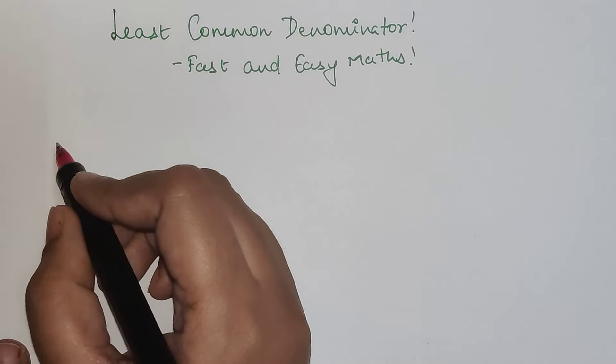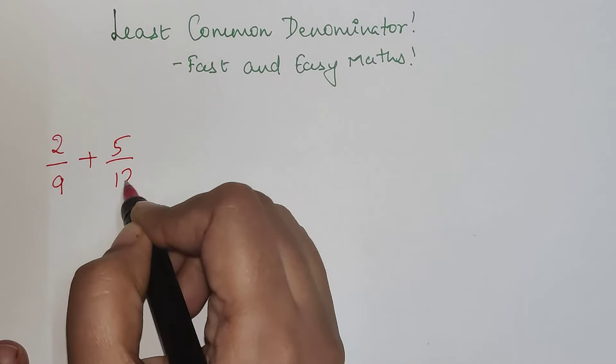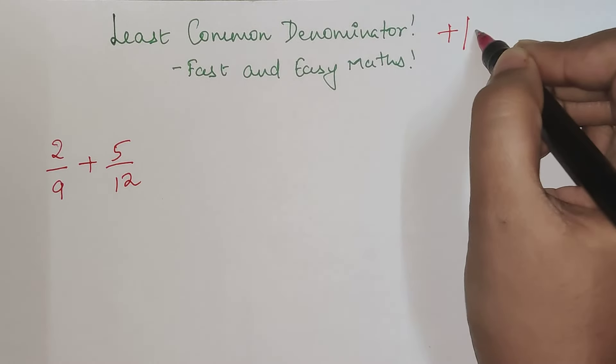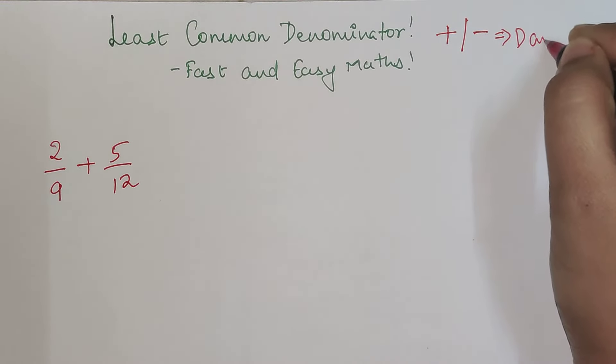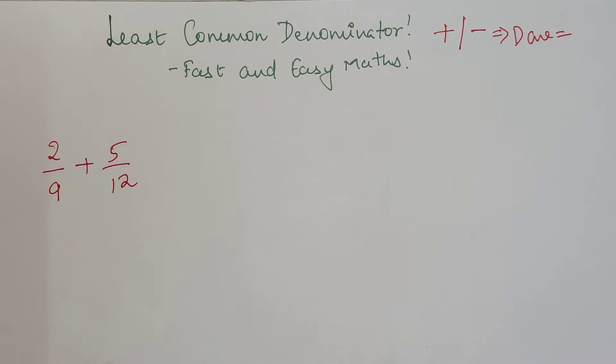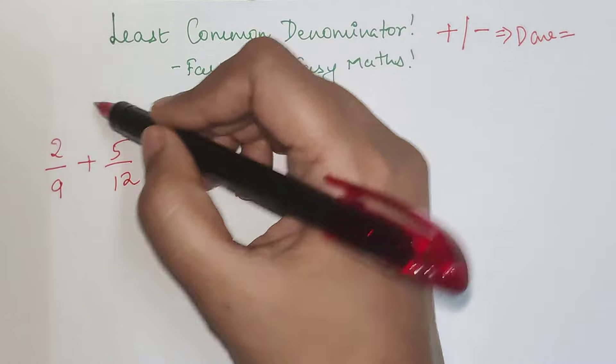Let's say if you had to add 2 upon 9 plus 5 upon 12. You can't add the numerators directly because the fractions do not have the same denominators. That's the basic rule. Whenever you do addition or subtraction, you can't do this unless the denominators are equal. So you have to first find the LCD.